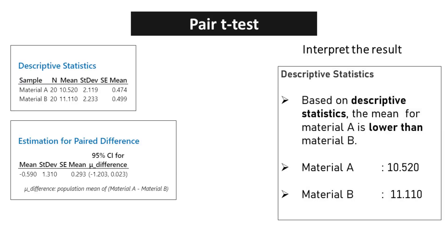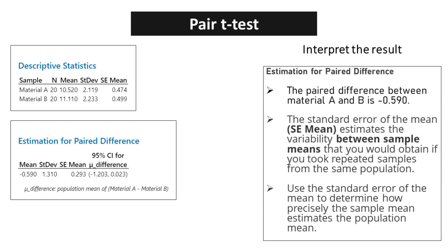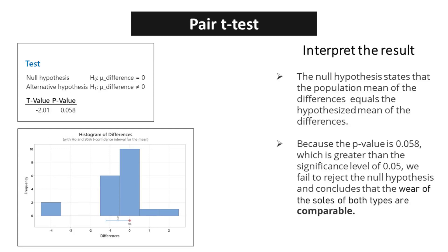Based on descriptive statistics, the mean for material A is lower than material B. The paired difference between material A and B is minus 0.590. The standard error of the mean, SE mean, estimates the variability between sample means that you would obtain if you took repeated samples from the same population. Use the standard error of the mean to determine how precisely the sample mean estimates the population mean. The null hypothesis states that the population mean of the differences equals the hypothesized mean of the differences. Because the p-value is 0.058, which is greater than the significance level of 0.05, we fail to reject the null hypothesis and conclude that the wear of the soles of both types are comparable.